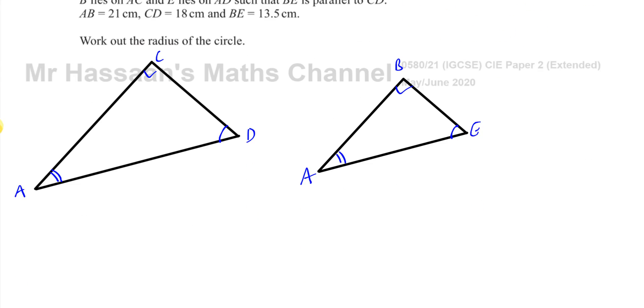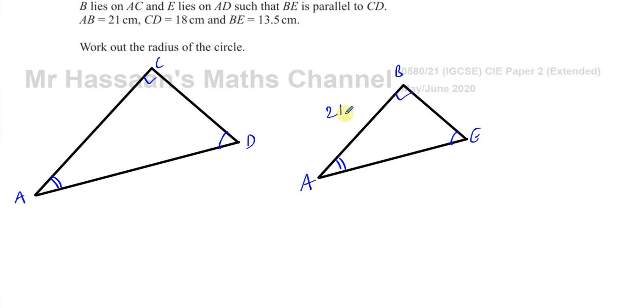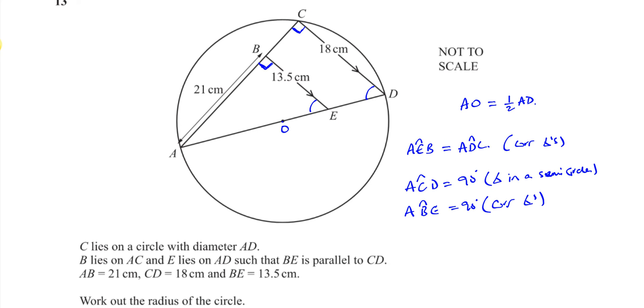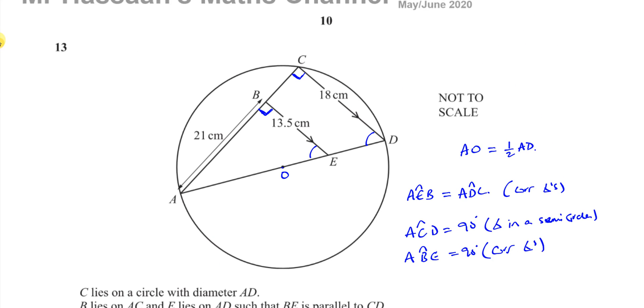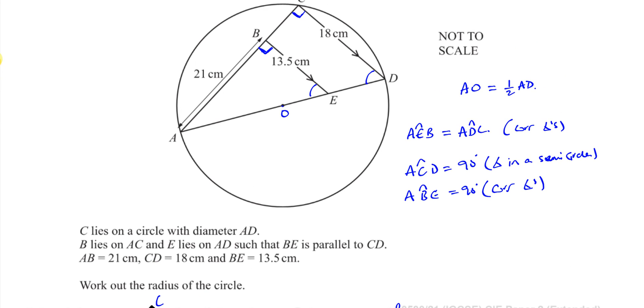So let's put the lengths in that we know. We have 21 is from A to B. So this is 21 centimeters. And we're also given 13.5 BE and 18. So this is 13.5 for BE and 18 for CD. So I've drawn the small triangle outside. That's 13.5.